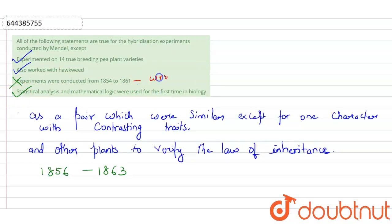So this statement is wrong. As it was mentioned that which of the following experiments are true for the hybridization experiments conducted by Mendel. So first option is correct, second option is also correct, and fourth option is correct. The incorrect option is option 3. This is the wrong statement.